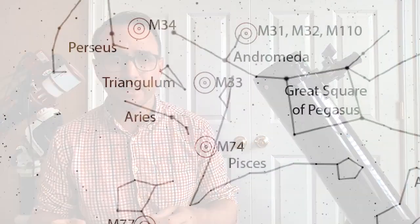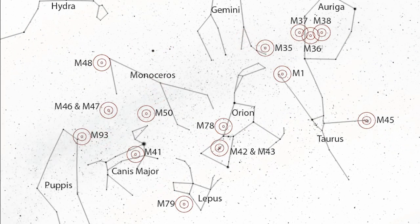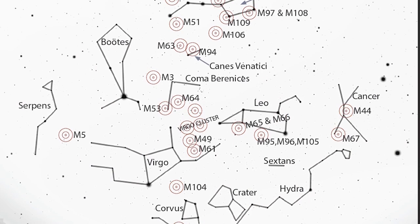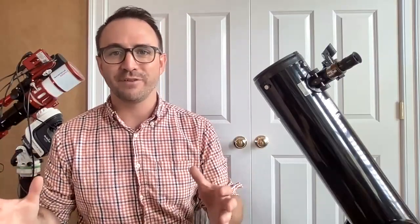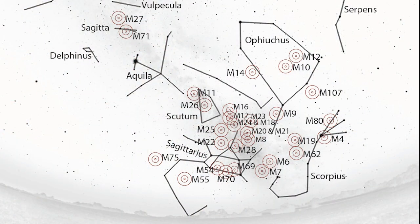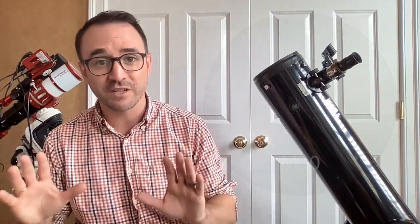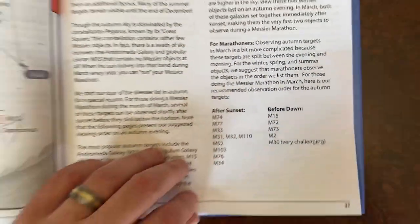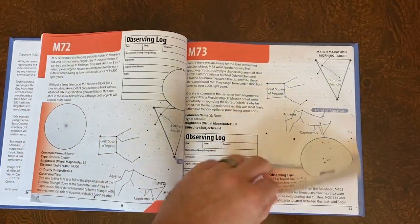It generally works something like this: you start right after sunset observing 10 autumn objects. Then you observe all the winter objects before they set below the horizon. Then you move on to the spring targets. After observing the spring objects and maybe a few summer objects, you go to bed for a while, waking up a few hours before sunrise when you observe the remaining summer objects, and then attempt to view the remaining autumn targets, including the most challenging marathon target, M30. Our book includes detailed instructions on completing a Messier marathon, as well as our recommendation for the best order to observe the targets.